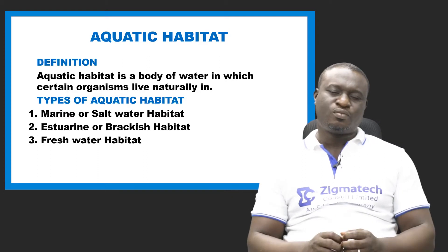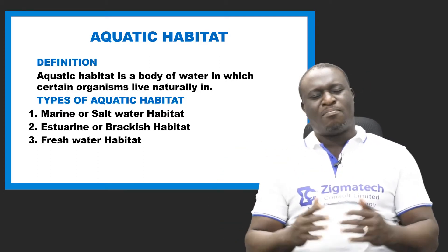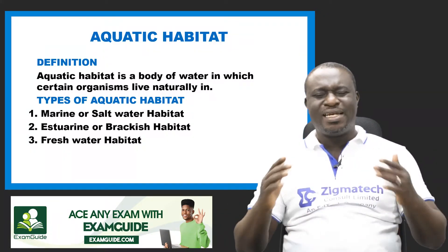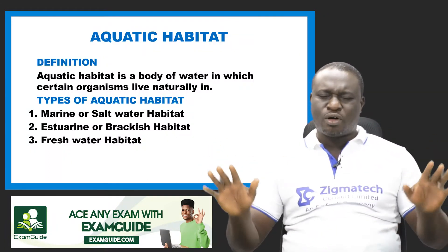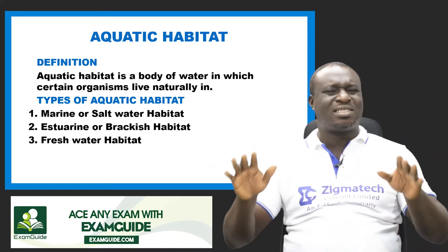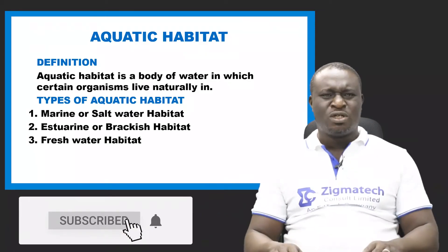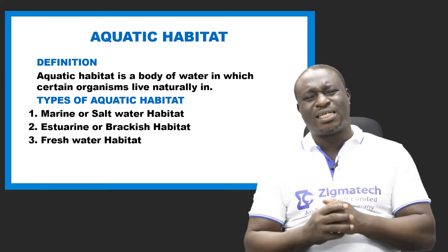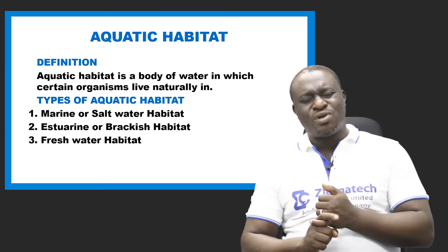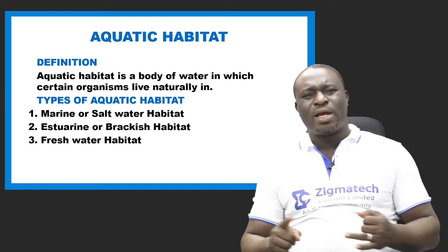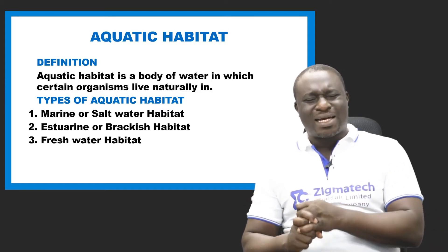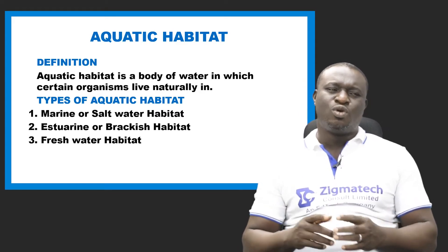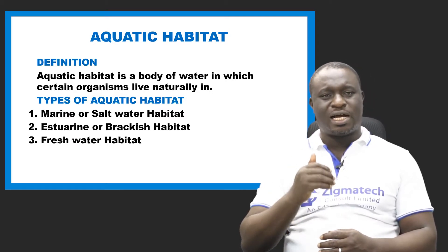Aquatic habitat is simply a body of water in which certain organisms live naturally. We have three types of aquatic habitat: the marine or saltwater habitat, the estuarine or brackish water habitat, and the freshwater habitat. We will be looking at each of these habitats one after the other.